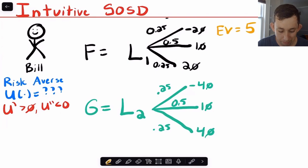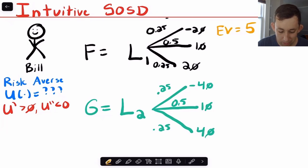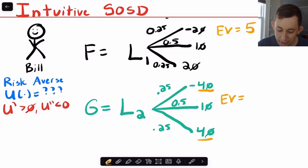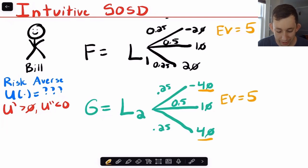Then we think about L2, which is my other option — we're going to represent L2 with CDF G. We notice that this lottery looks pretty similar to L1. The only difference is that instead of a risk of gaining or losing 20, we're now at risk of losing 40 or gaining 40. Looking at the expected value, the 40s cancel out and again I'm left with an expected value of five.